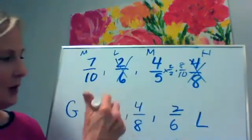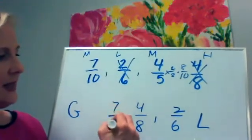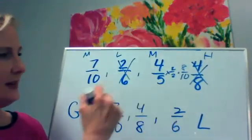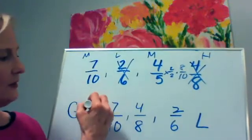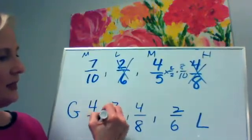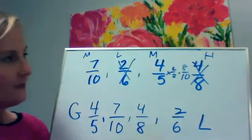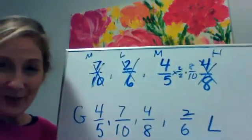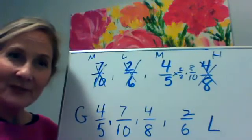Since I'm going from greatest to smallest, I'll put seven tenths there, and then I have to be careful — the largest fractional amount in my list is four fifths. I like to cross them out once I use them so I don't get confused.